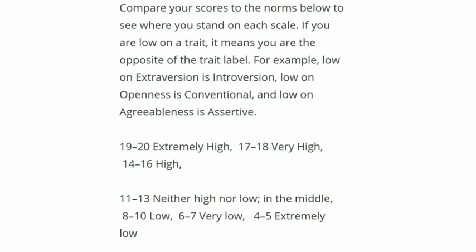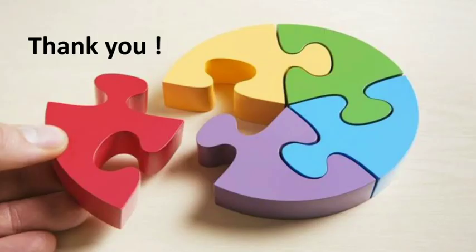Once you get your scores, check the scale whether you are low or high, and then see what kind of personality it is indicating. For example, if Neuroticism is 4 — extremely low — your negative emotions and anger are very low. I hope with this you have found what kind of personality you have. If you have any doubts, feel free to write in the comment box. Thank you so much for watching — bye, take care!